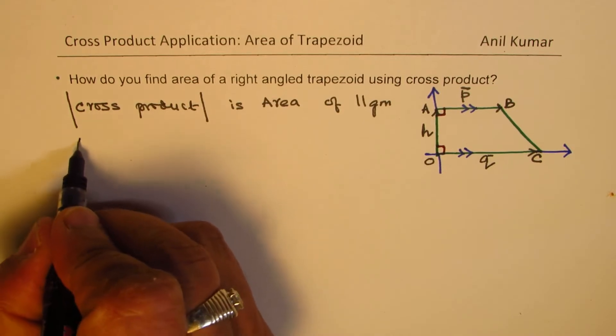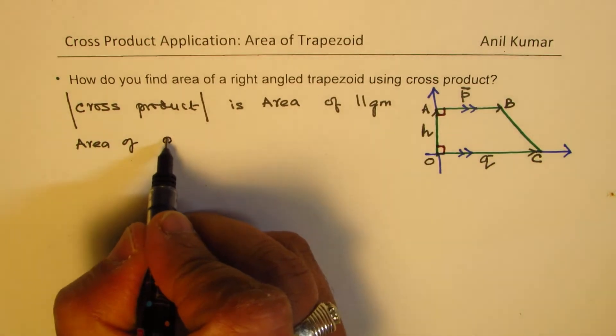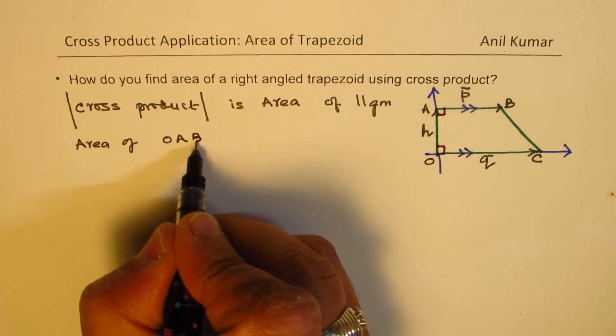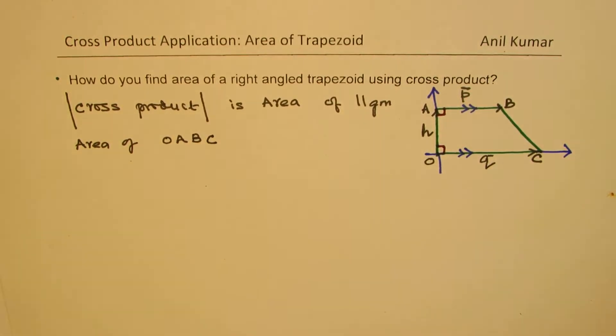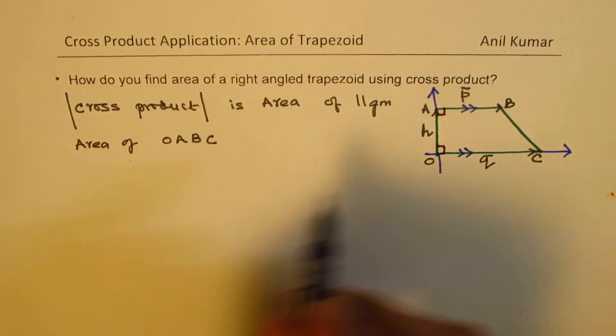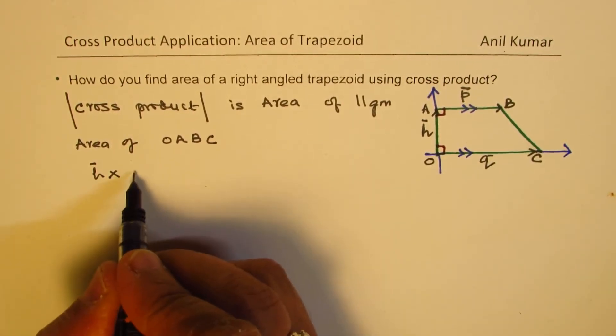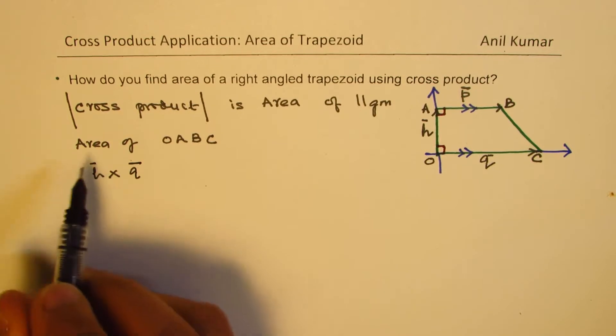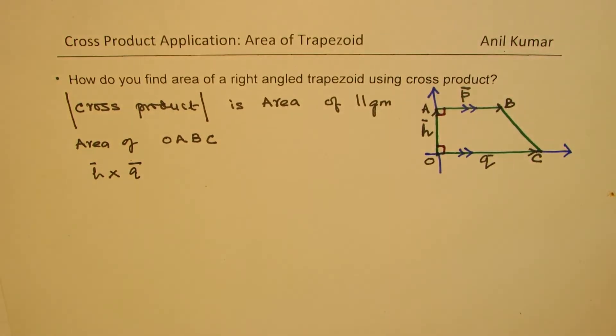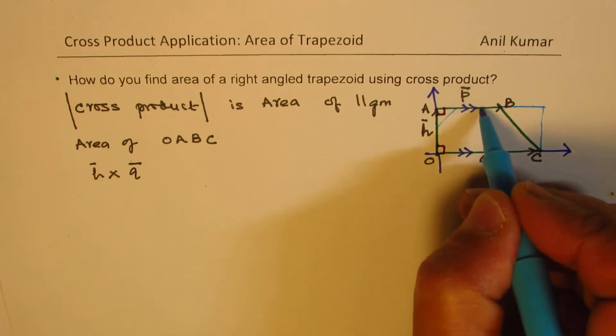We need to find area of the trapezoid O, A, B, C. So, what we can do is have a cross product of the vector H cross vector Q. If I do vector H cross vector Q, I get area of a parallelogram, which will be a rectangle in this case, which is going to be this area.